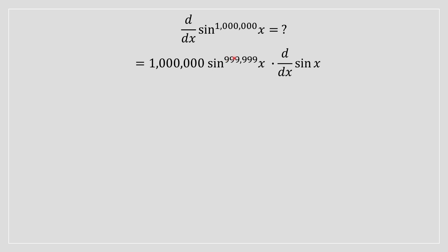So million minus one is going to be equal to 999,999, right? And then you just have to take, according to the chain rule, the derivative of the inner portion. In this case, the inner bracket is sine x.